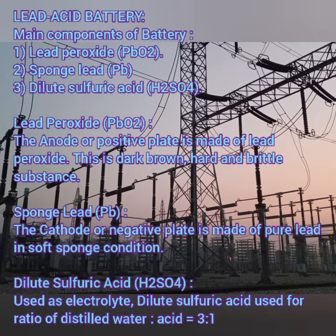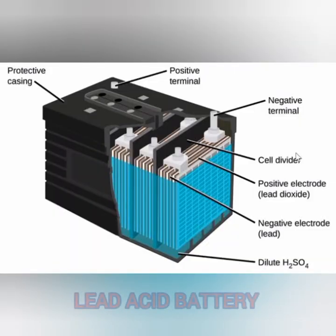The anode is lead peroxide, which acts as the positive plate, and the cathode is pure lead, which acts as the negative plate. The electrolytic solution is H2SO4 — sulfuric acid — mixed with water in a ratio of 3 to 1. During discharging, the sulfuric acid splits into hydrogen ions and SO4 ions.